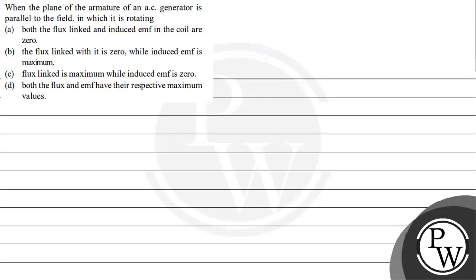Hello, let's read this question. When the plane of the armature of an AC generator is parallel to the field in which it is rotating. Option A: both the flux linked and induced EMF in the coil are zero. Option B: the flux linked with it is zero while the induced EMF is maximum. Option C: flux linked is maximum while the induced EMF is zero. Option D: both the flux and EMF will have their respective maximum values. Let's start this question.